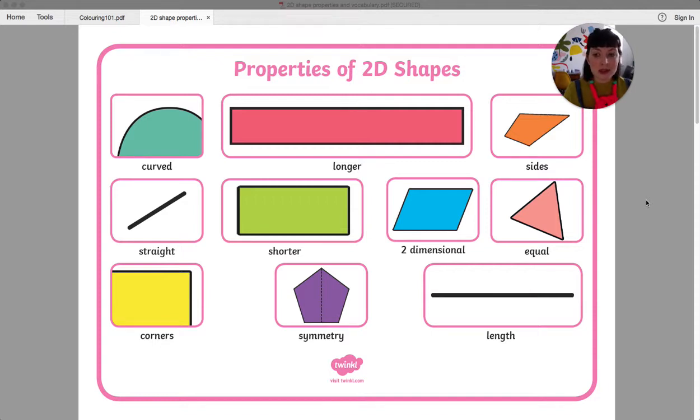We can also look at corners, which is something that you will be doing tomorrow in your lesson, and we can look at symmetry, so whether something is the same on both sides. You can use a mirror for that or you can fold a paper shape to find out symmetry.